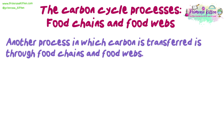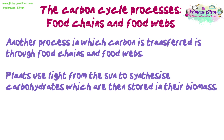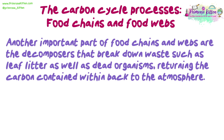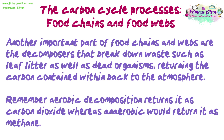Another process in which carbon is transferred is through food chains and food webs. Plants use light from the sun to synthesize carbohydrates which are stored in their biomass. When plants are eaten by herbivores, the carbon is transferred, and then transferred again if the herbivore is eaten by a predator. Decomposers break down waste such as leaf litter as well as dead organisms, returning the carbon back to the atmosphere. Aerobic decomposition returns it as carbon dioxide, whereas anaerobic returns it as methane.